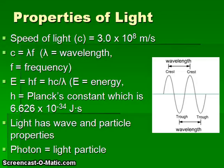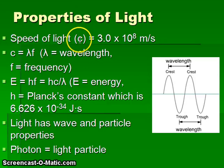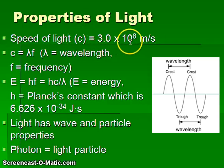To better understand atomic spectra, it's important to review the properties and characteristics of light. First of all, the speed of light — we use c for this — is 3.0 times 10 to the 8th meters per second.